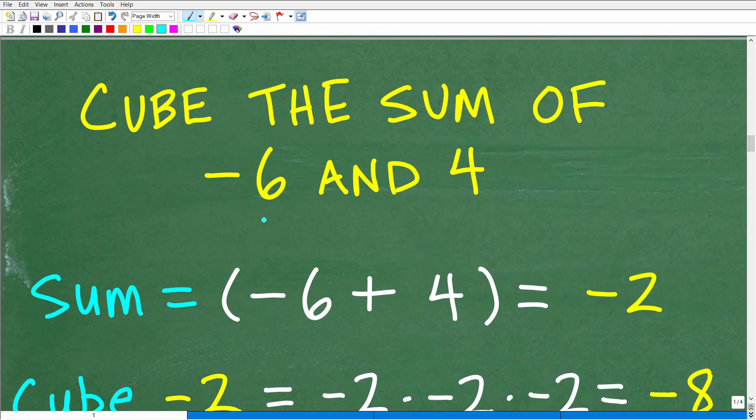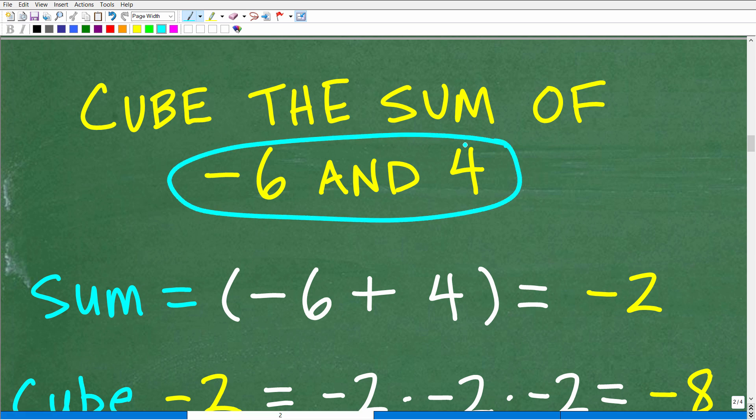We're going to cube the sum of negative 6 and 4. First thing we want to do is find the sum of negative 6 and 4. And again, we want to write sums and differences using parentheses. So we're going to put parentheses, negative 6 plus 4, end parentheses. The answer is negative 2.